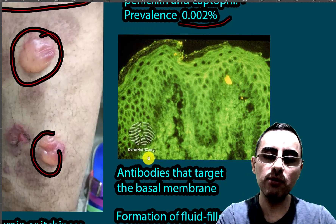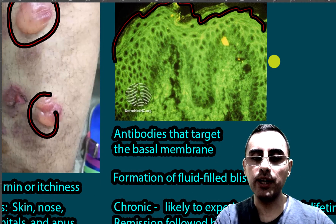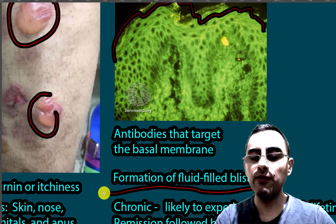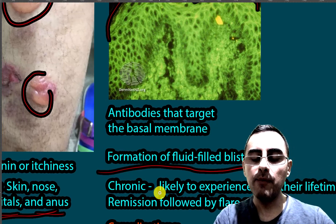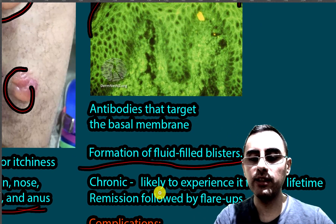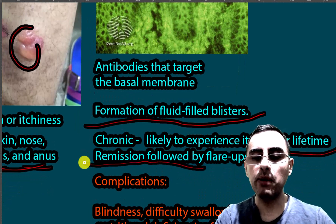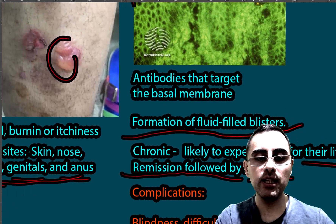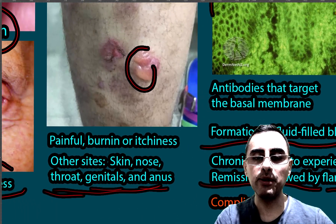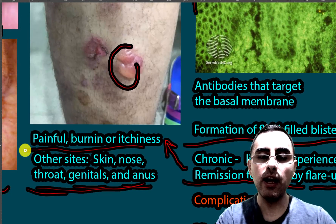The mechanism of this disease involves antibody production targeting the basal membrane of the mucous membrane, leading to the formation of fluid-filled blisters. Usually the disease is chronic, meaning patients are likely to experience symptoms for their lifetime, but it has some remissions followed by flare-ups — sometimes symptoms are less prominent, sometimes more prominent. The most common symptoms are painful burning and itching sensation of the blistering area.